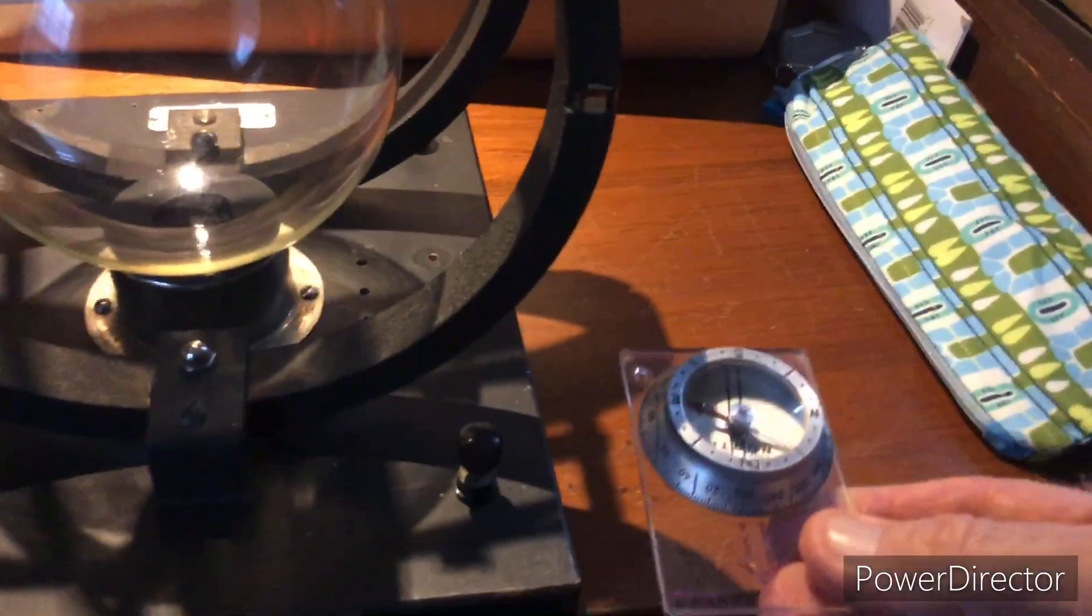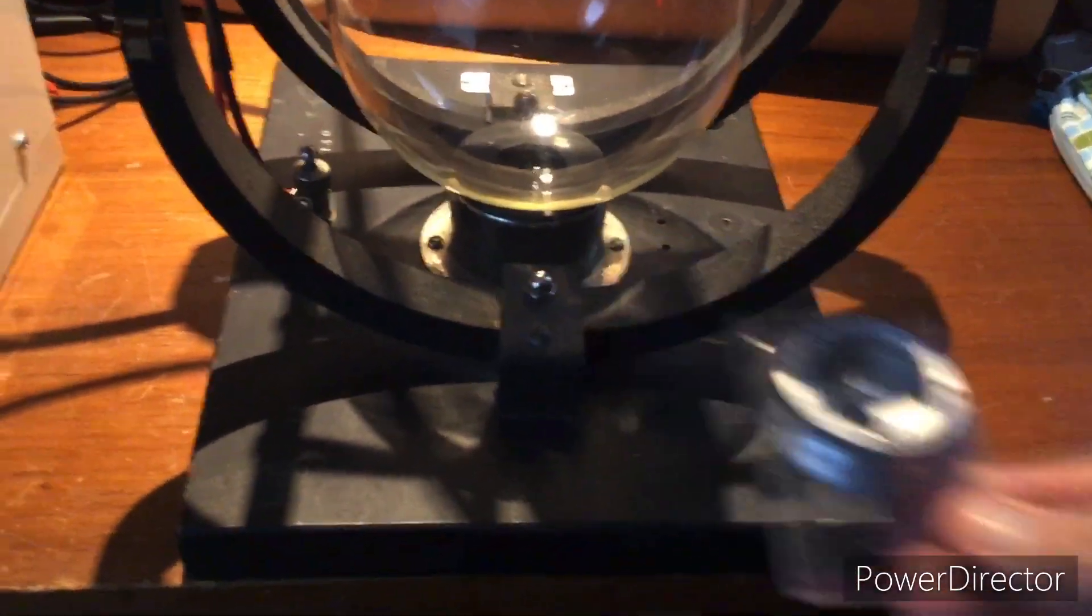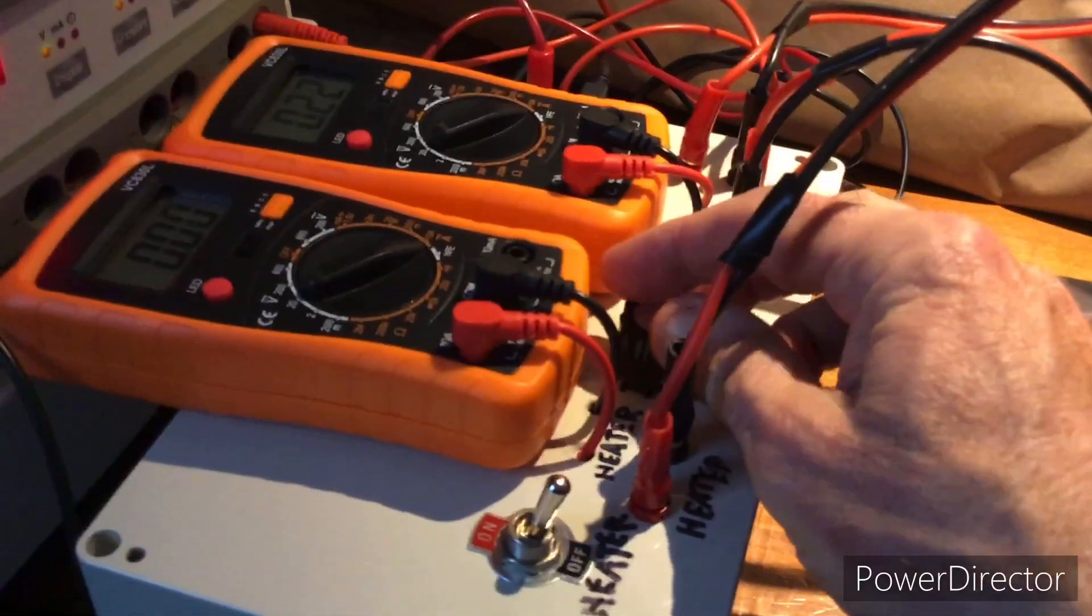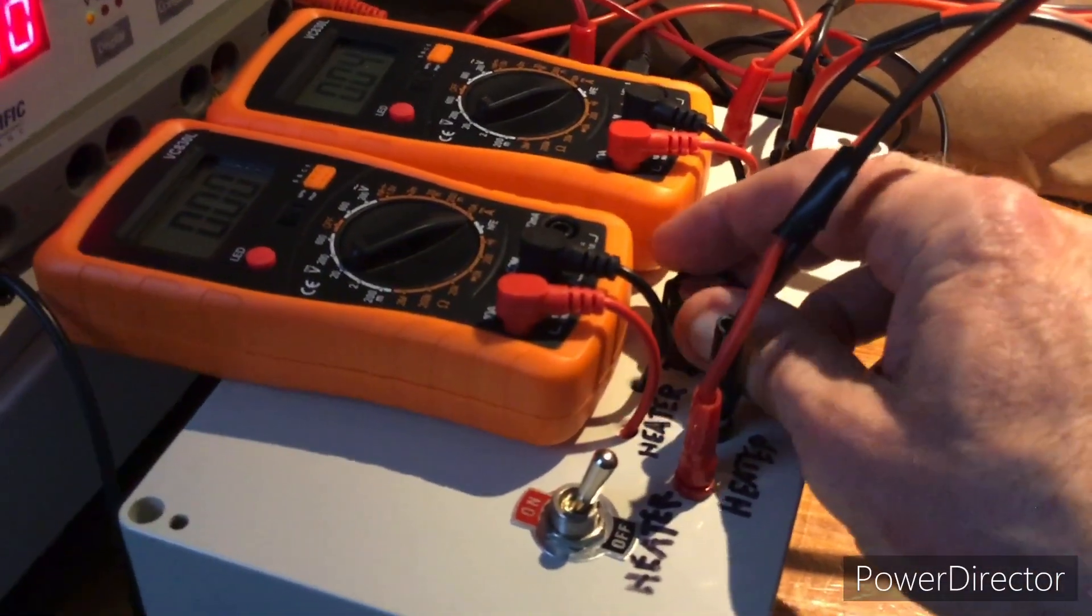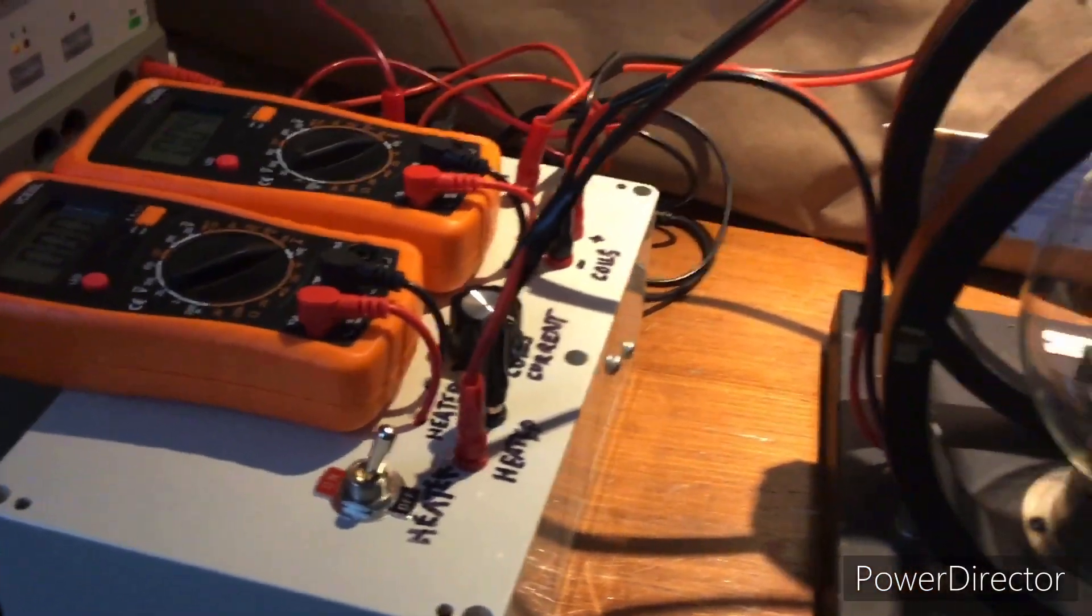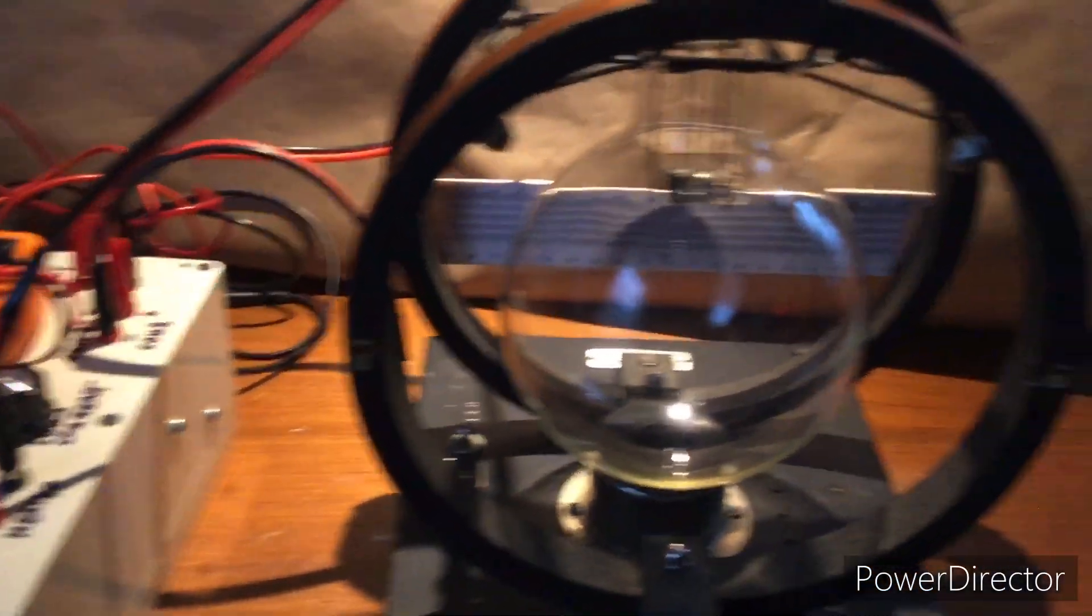So, I'm going to turn the current off. I'll dial back the current to the Helmholtz coils to zero. And now that I've done that, I'll move the camera and set things up for the demonstration.